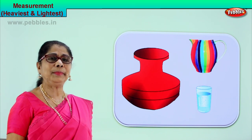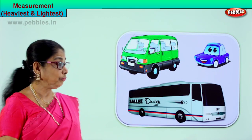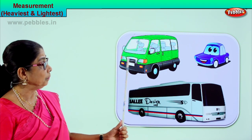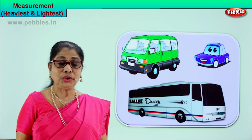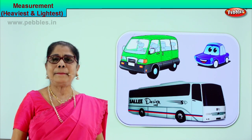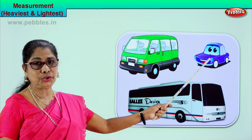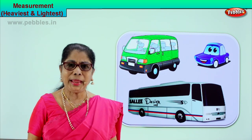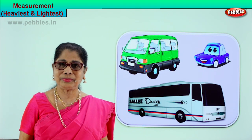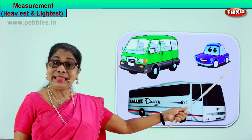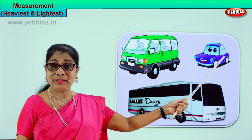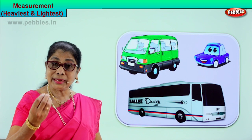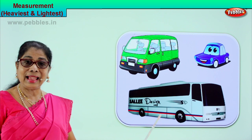Observe and tell me the lightest and the heaviest item here. Look carefully. You have three toys here: there is a little toy car, a toy van, and a toy bus. Among the three, which is the smallest? The toy car. Next, the van. Next, the big bus. When you weigh it, which is the heaviest? The bus. And which can be the lightest of the three? The toy car is the lightest. The heaviest is the bus. You learn to observe — look, see and say. The two measurements are: lightest car and the heaviest bus.